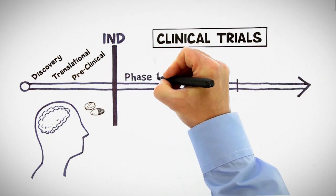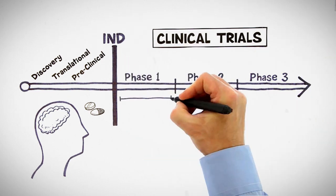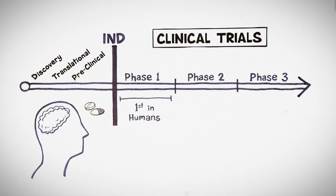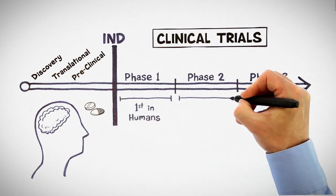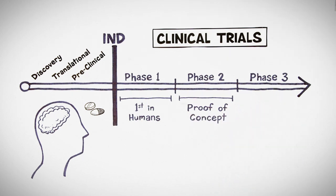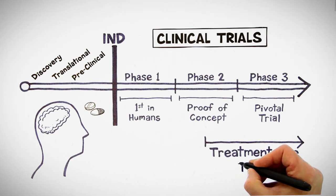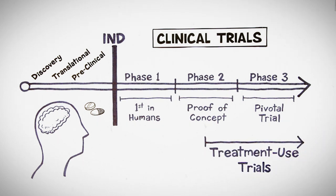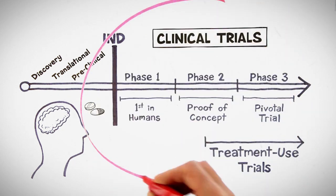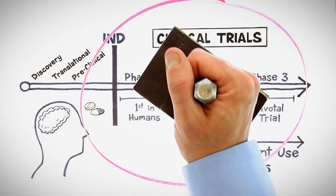In your IND you describe what you want to do with this unapproved product. It may be a first-in-humans safety trial, or it could be a dose-ranging proof-of-concept trial, or later on perhaps a pivotal trial to prove efficacy. These are examples of research clinical trials, but there's something in addition that you can submit in your IND, and that is treatment use clinical trials. The key here is that any use of an unapproved drug has to be described in an IND and authorized by FDA.